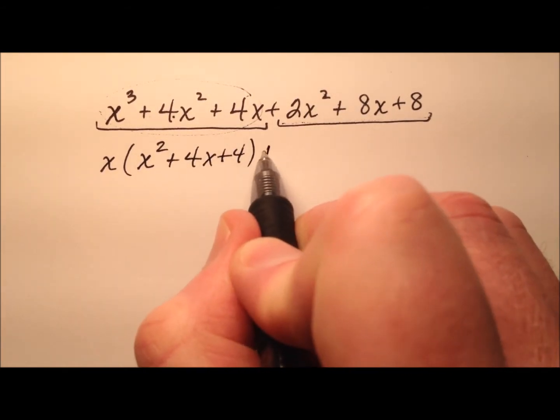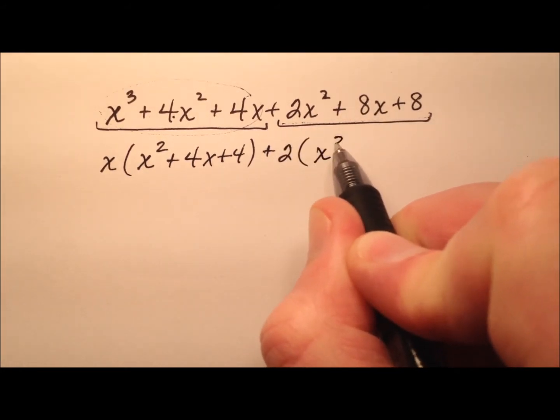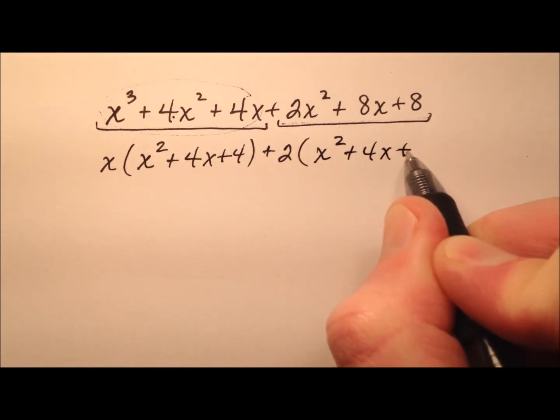And here it looks like I'll have a positive 2, so I'll put plus 2. So that looks like it'll be x squared plus 4x plus 4.